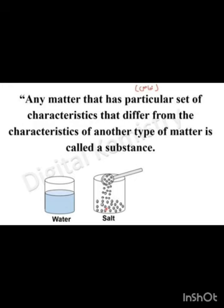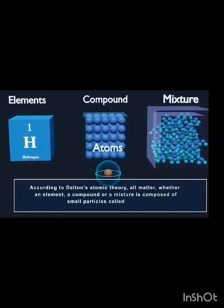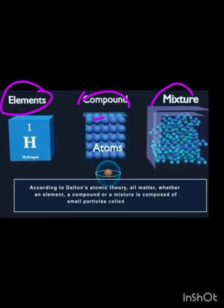We can see the three states of matter. These include elements — for example, hydrogen — compounds, which are a combination of elements, as well as mixtures. Here we can differentiate between elements, compounds, and mixtures. Compounds are a combination of elements.